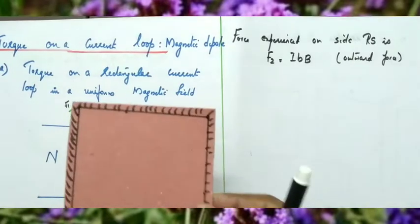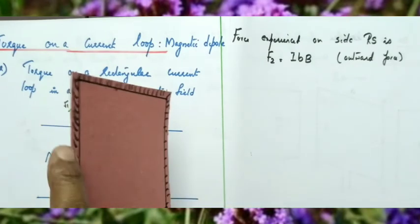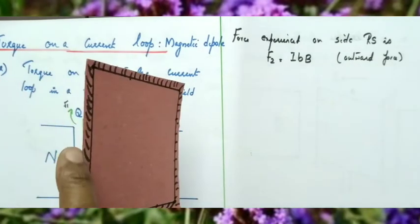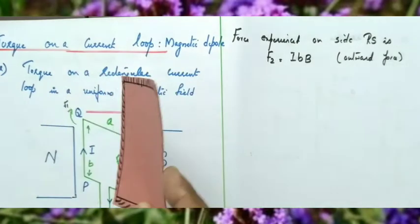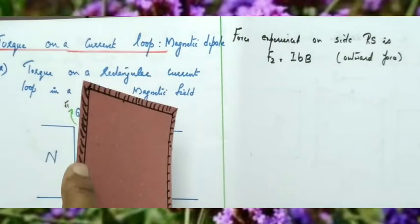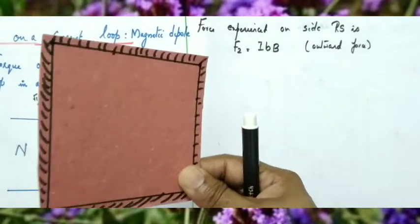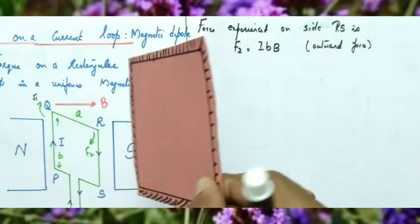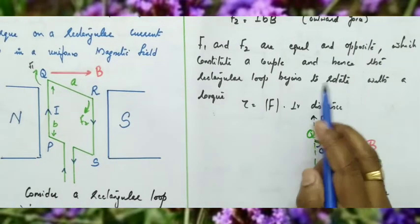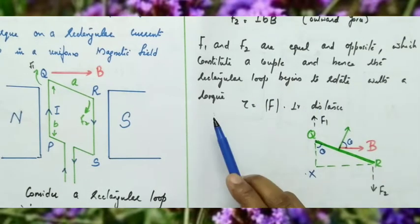Two forces are acting on the rectangular loop, which is placed slightly inclined. Side PQ experiences a force into the plane and side RS experiences a force outward. Because of this, the rectangular loop begins to rotate. F1 and F2 are equal and opposite, constituting a couple, and hence the rectangular loop begins to rotate with a torque.